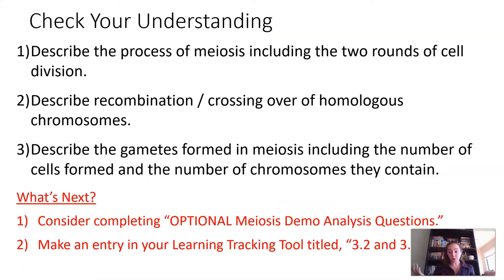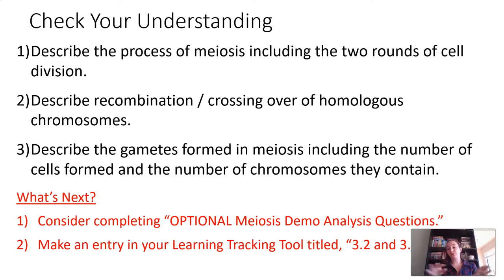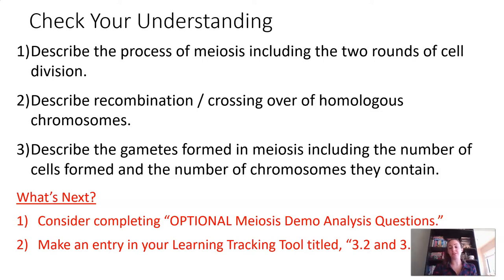That's all for today — we wanted to dig in and go into a little more detail on the process of meiosis. To check your understanding: can you describe the process of meiosis including the two rounds of cell division? Try resorting those cards or use your own set of chromosomes to model the process. Next, can you describe recombination or crossing over of homologous chromosomes? And can you describe the gametes formed in meiosis, including the number of cells and chromosomes each contains?